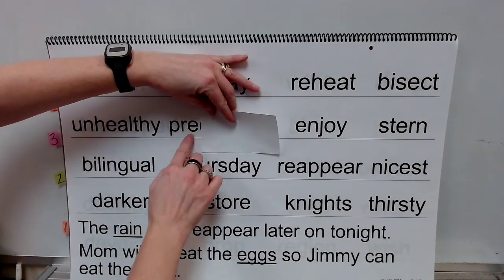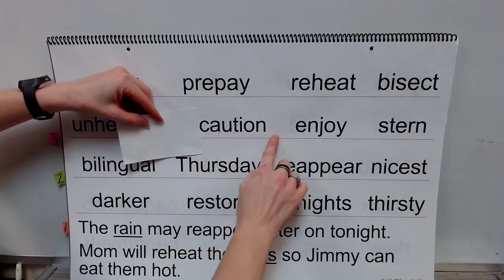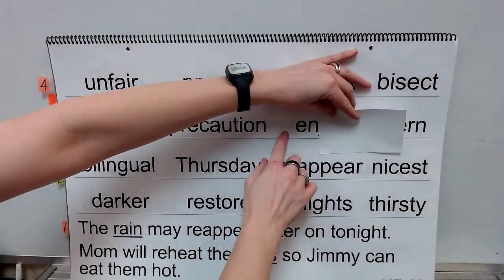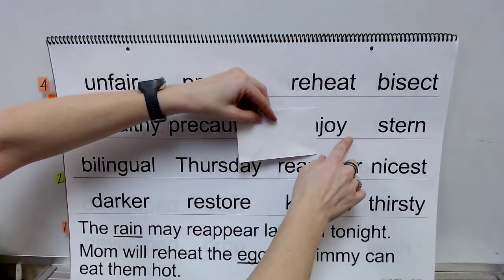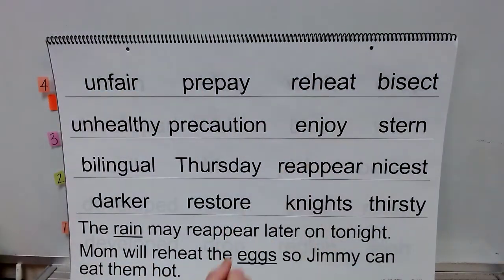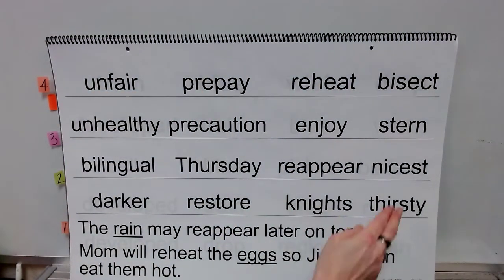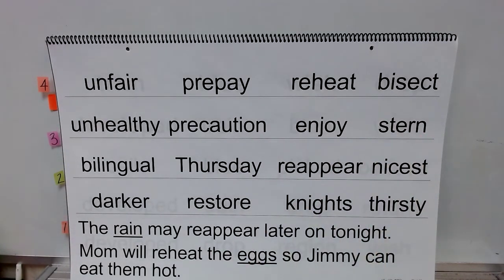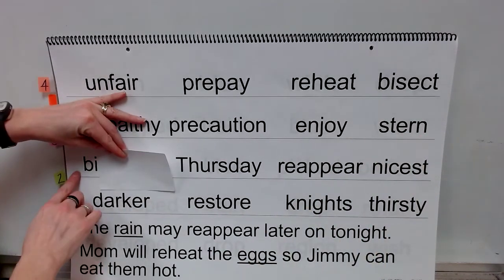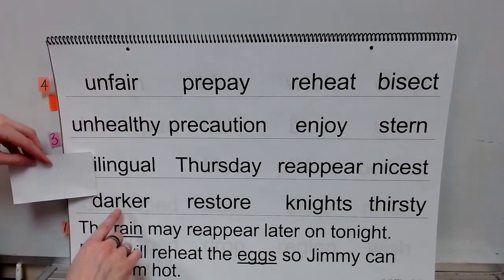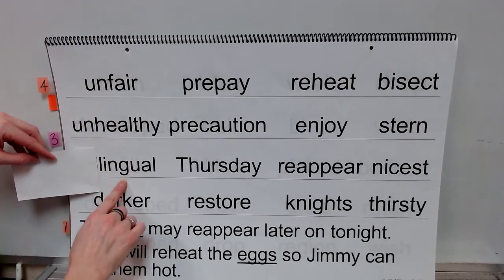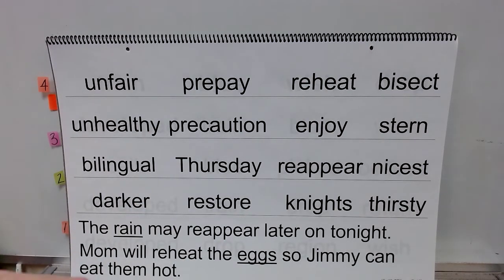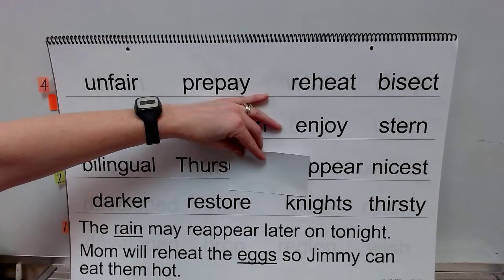Prefix: pre. Base word: caution. Enjoy. Sound: er. Word: stern. Prefix: bi. Base word: lingual. Word: bilingual.